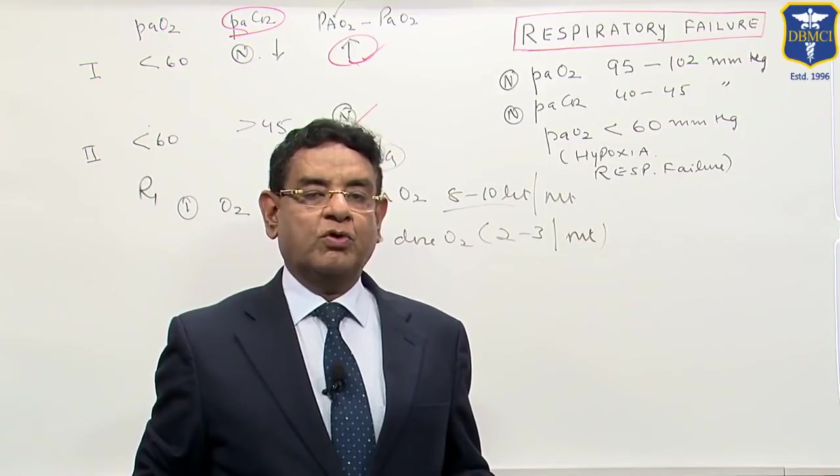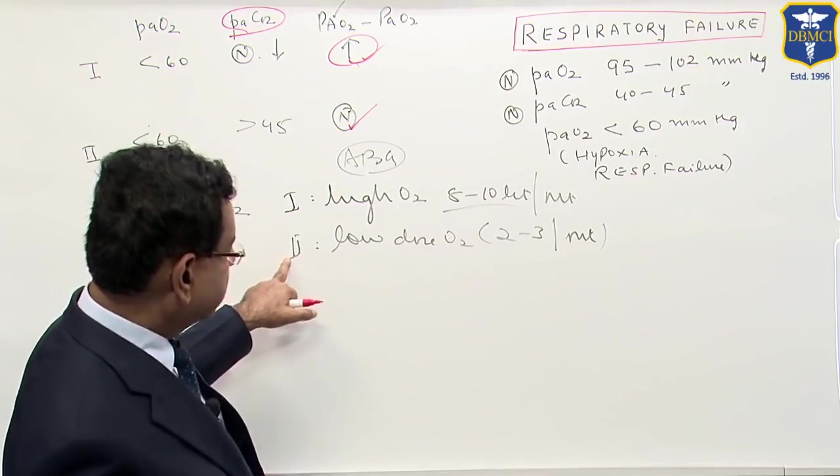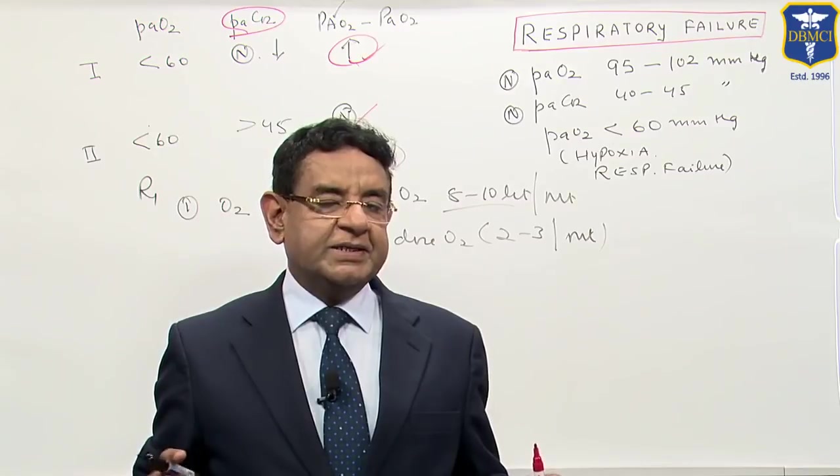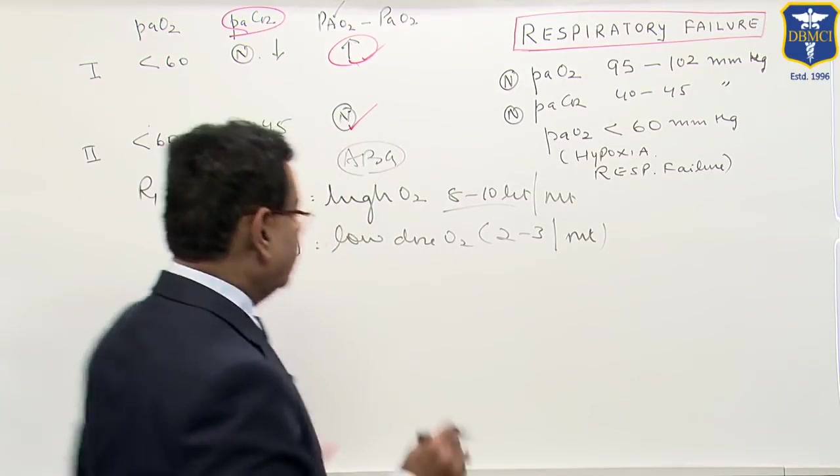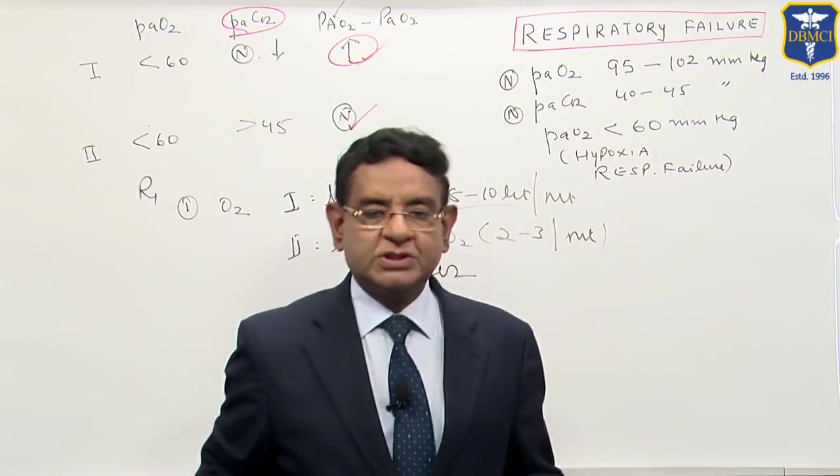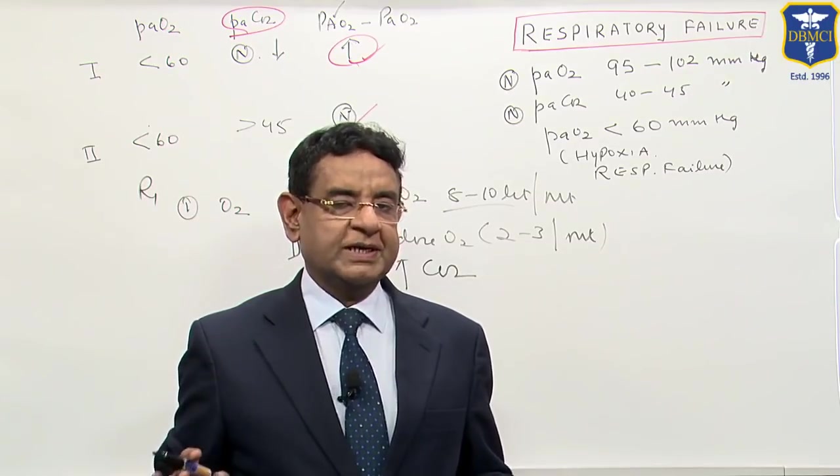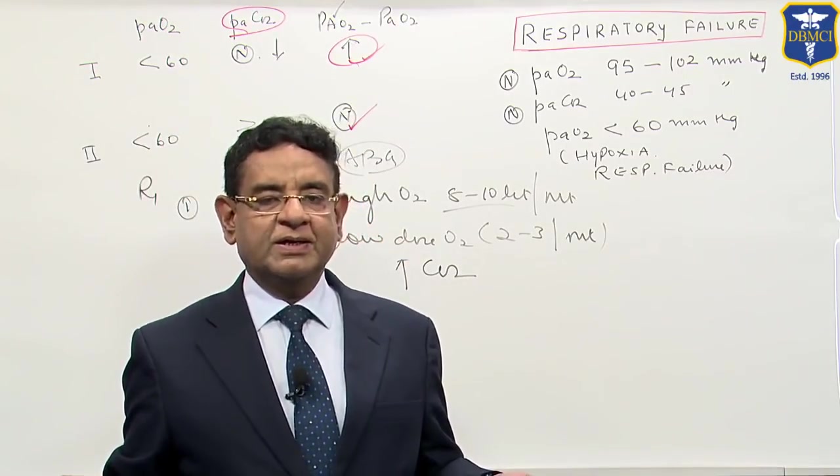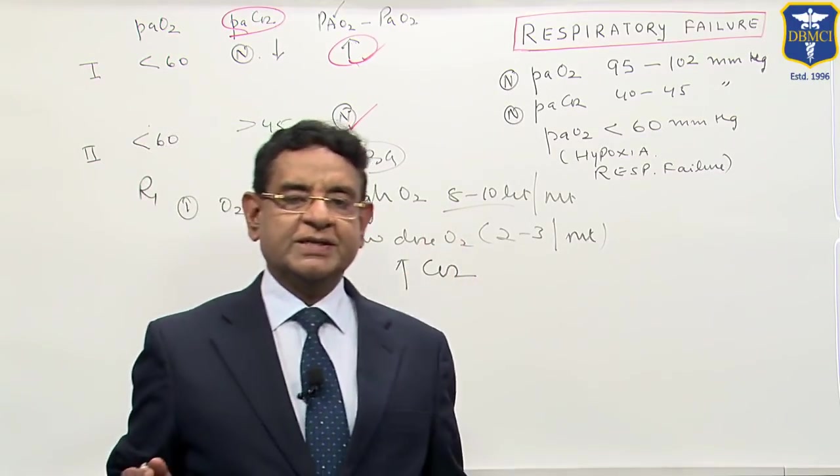Why you give low flow oxygen in type 2? Because already CO2 is very high in type 2 failure. If you suddenly increase the oxygen flow into the lungs, large amount of CO2 will be produced and that will lead to CO2 narcosis. So it is mandatory to give low flow oxygen in type 2. In type 1, there is no problem of hypercapnia. So we can give high flow oxygen, 8 to 10 liters per minute.